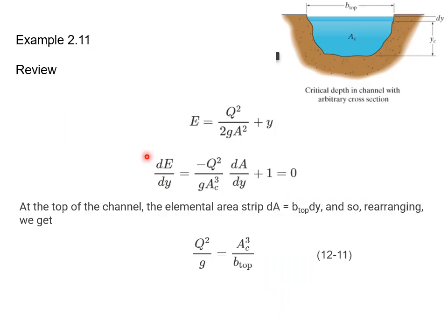Let's review a little bit. Back in lecture 2, maybe lecture 1, we looked at the energy equation. The energy is kinetic plus the potential. If you take the derivative of E with respect to y and set this equal to 0, what you find is that there's a relationship between Q and the critical area. Q squared over g is equal to AC cubed over the b top, where b top is the length of the top surface here.